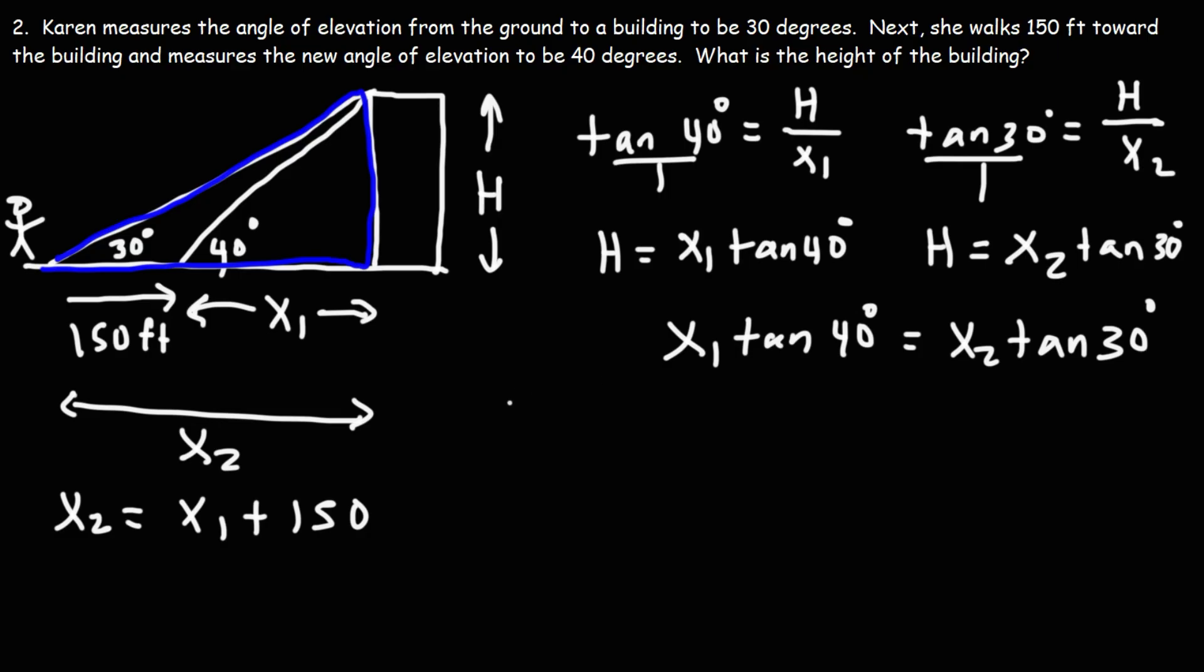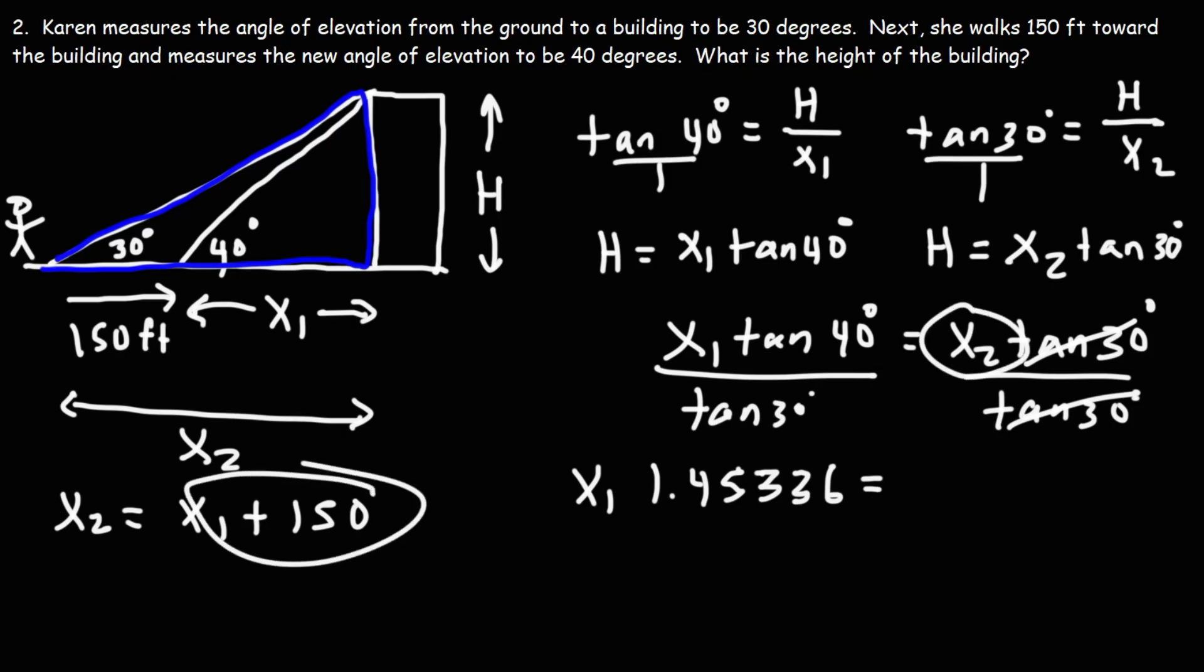Now what I'm going to do is I'm going to divide both sides by tan 30. So let's get the decimal equivalent of tan 40 over tan 30. Tan 40 divided by tan 30, that's 1.45336, and then that's times x1. Now x2, we can replace that with x1 plus 150.